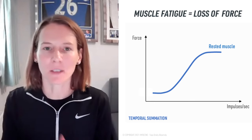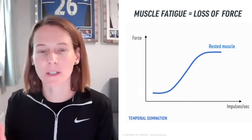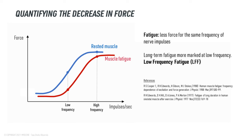We have our standard muscle force-frequency relationship, which is this sigmoid curve shape. When a muscle is fatigued, this curve shifts to the right, and given this sigmoid curve shape, this means that the slope more significantly affects the difference between rested and fatigued muscle at lower frequencies than higher frequencies. If we are able to fix the frequency of nerve impulses through a stimulator, we observe less force in the fatigued condition at the same frequency than in the rested muscle. This difference in force output is more notable at lower frequencies than higher frequencies.